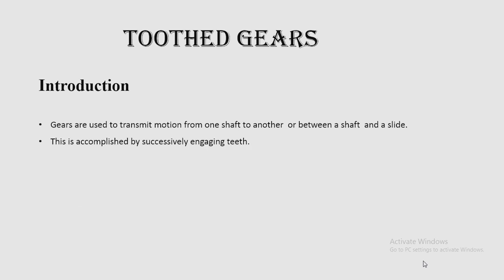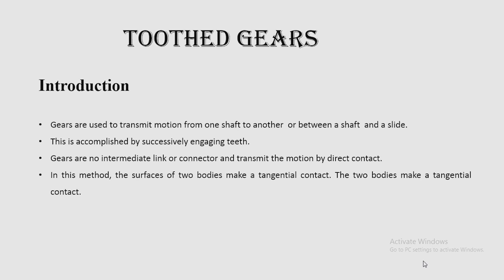Motion transmission is accomplished by successively engaging teeth. Gears have no intermediate link or connector and transmit motion by direct contact. In Theory of Machines Part 1, we saw that intermediate links or connectors were used to transmit motion from one shaft to another. Here, gears transmit motion by direct contact.